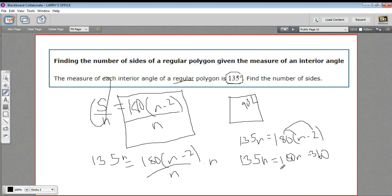And then let's see, I can subtract 180n from both sides. And if I do that, I should get negative 45n over here. And negative 360 over here.